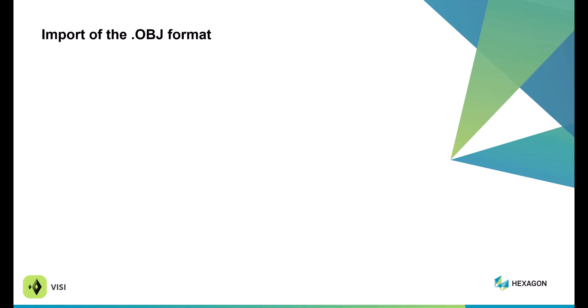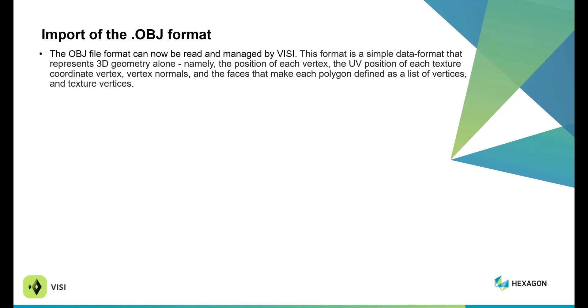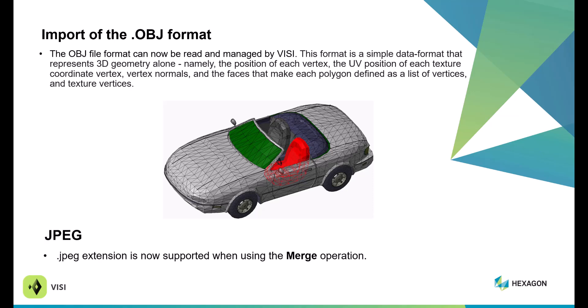There's also another translator-supported update for the .obj format, which supports mesh type data for UV positions, vertex normals, vertex faces, and so on. Additionally, the .jpeg extension is now supported within the merge options.